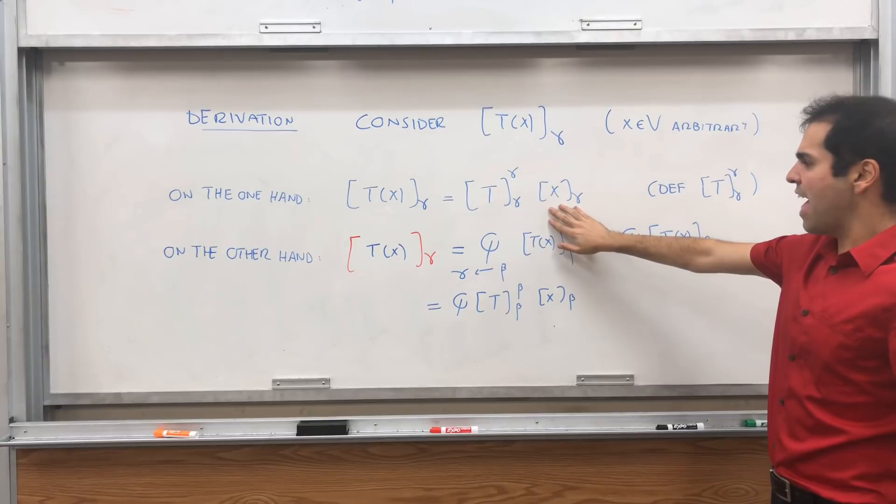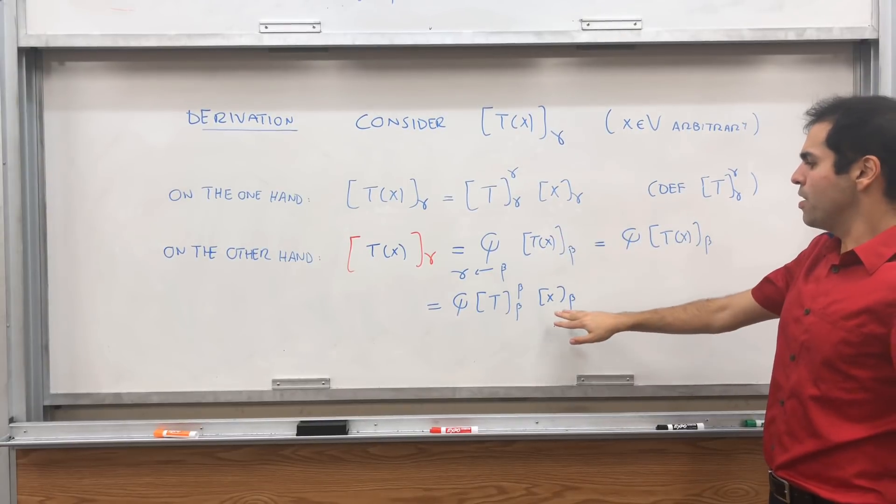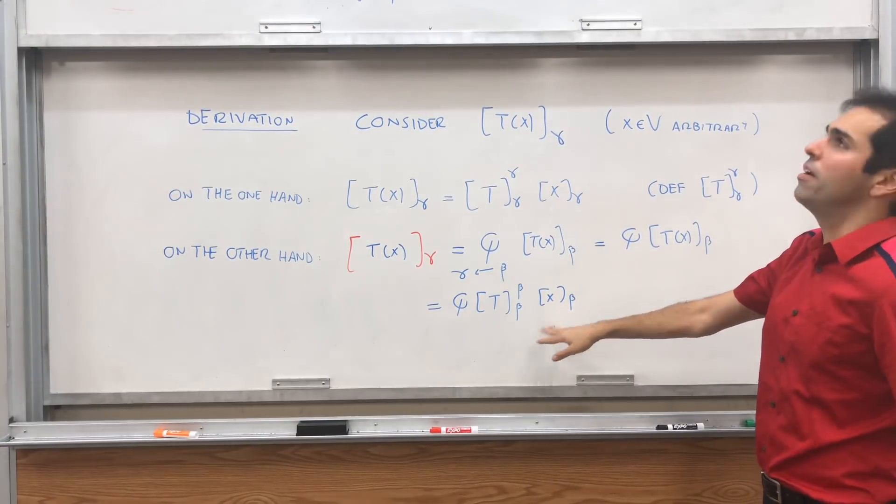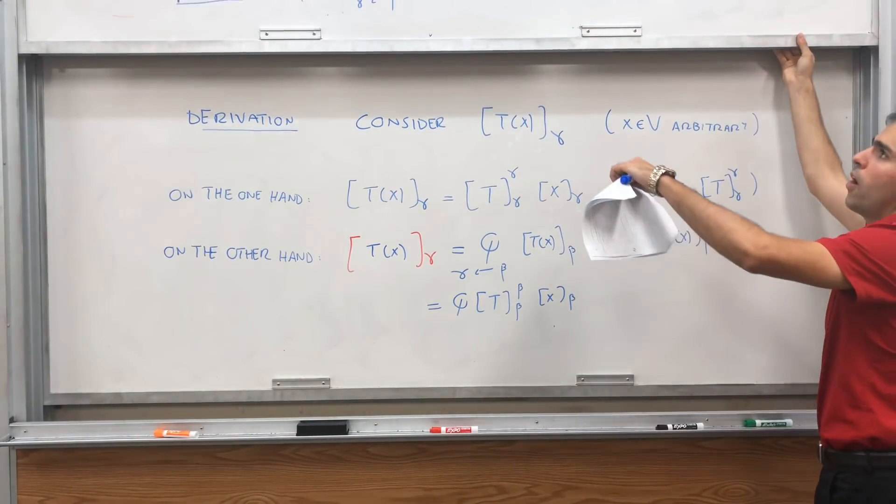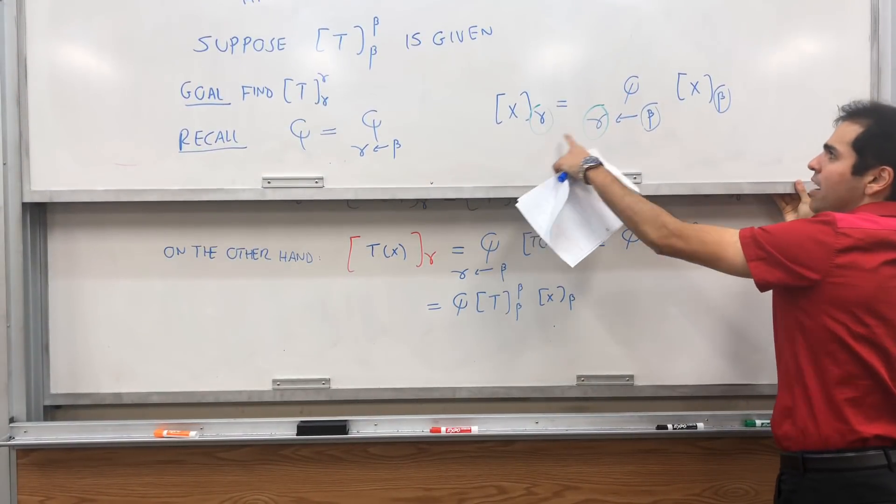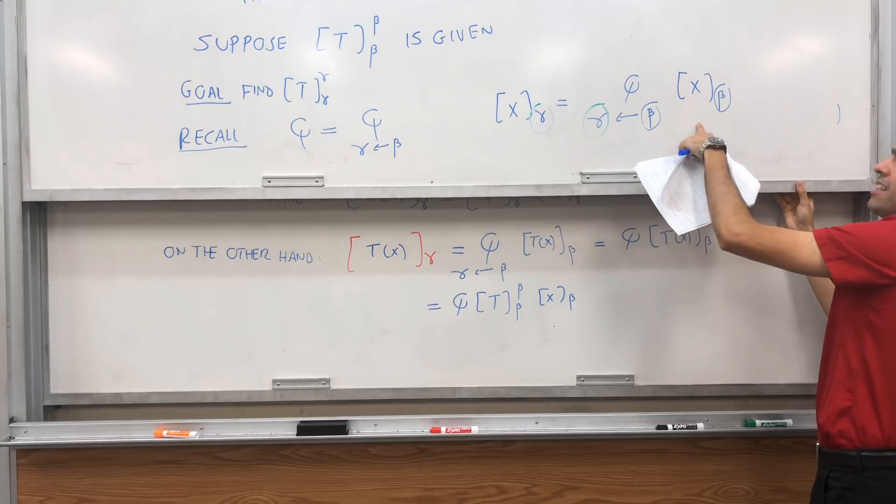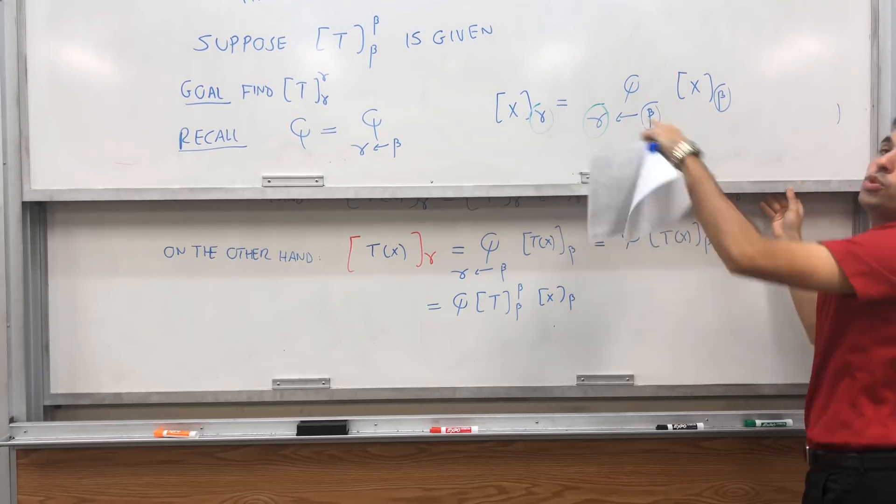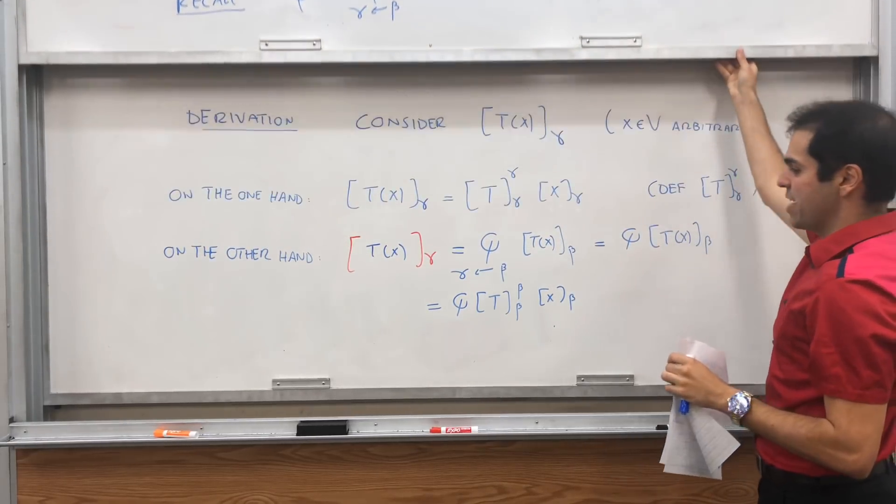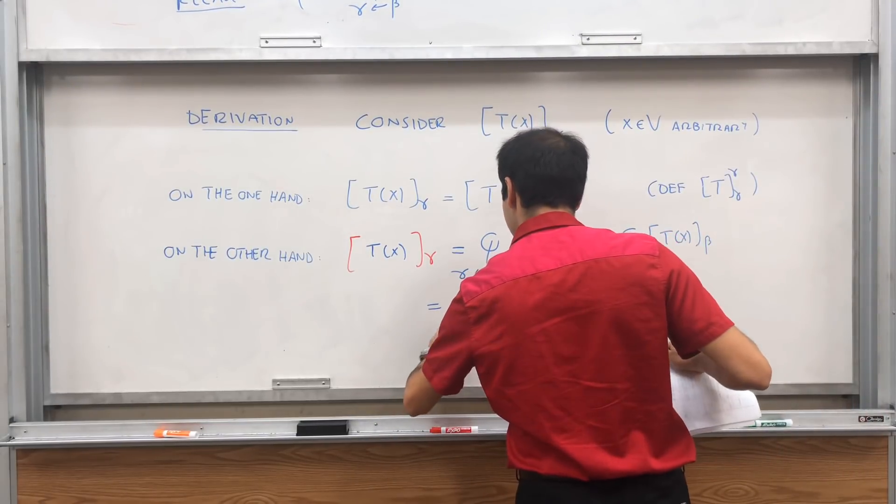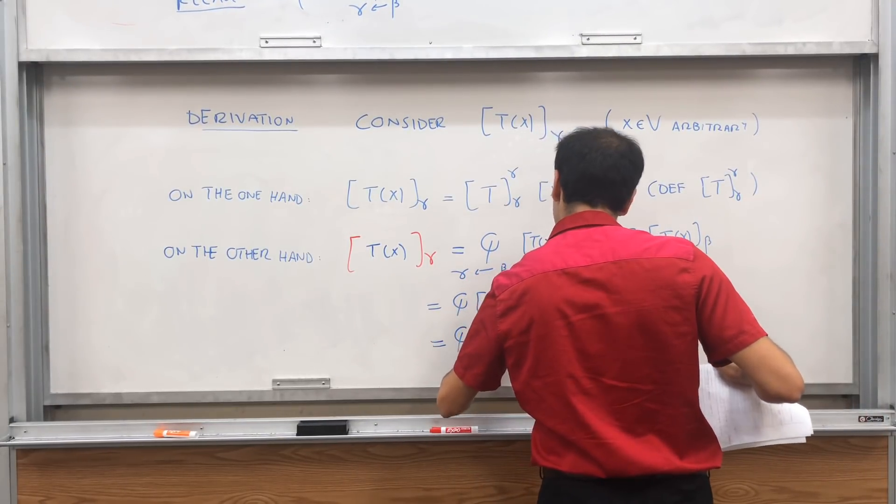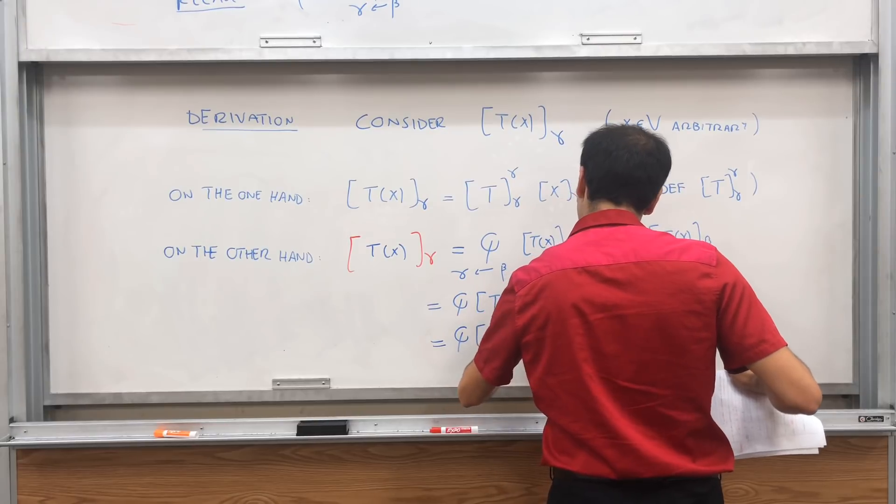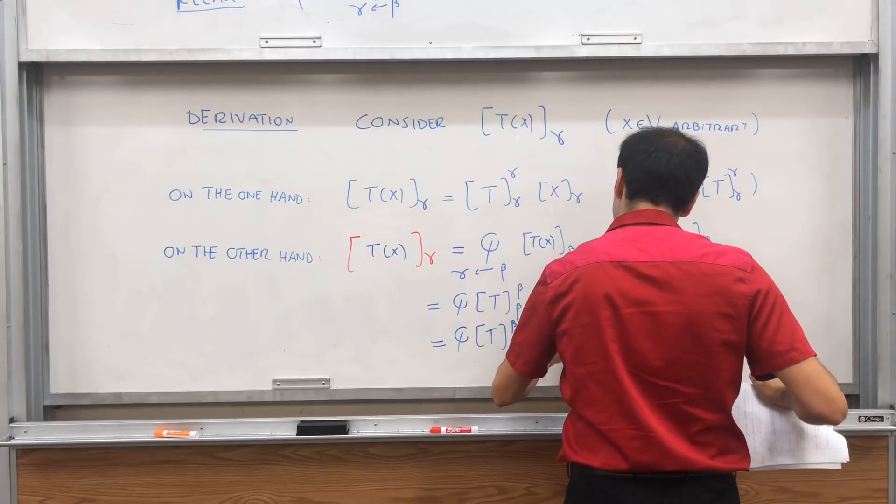Finally, notice here we have an X gamma, but ideally we would also like to have an X gamma. But that's not a big problem, because X gamma is Q times X beta. So X beta is Q inverse times X gamma. So this junk then becomes Q T beta beta and then Q inverse X gamma.